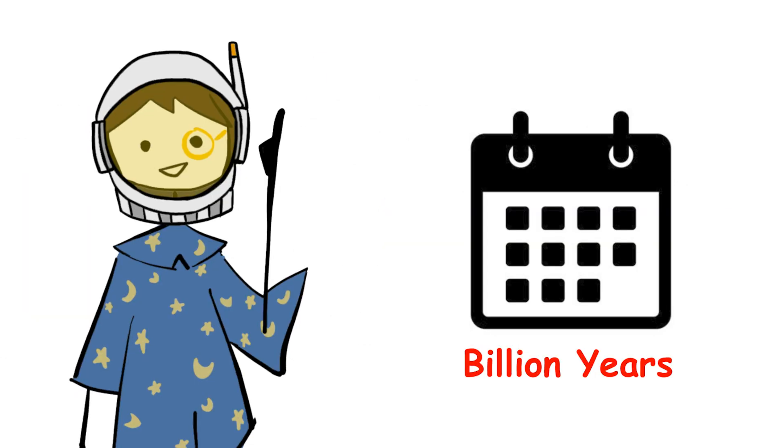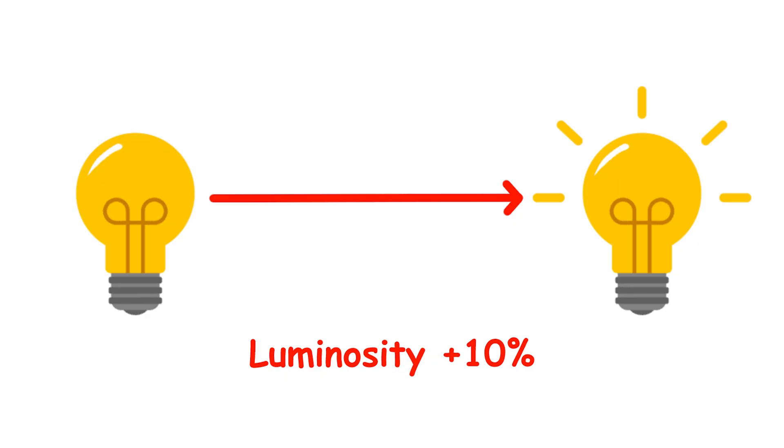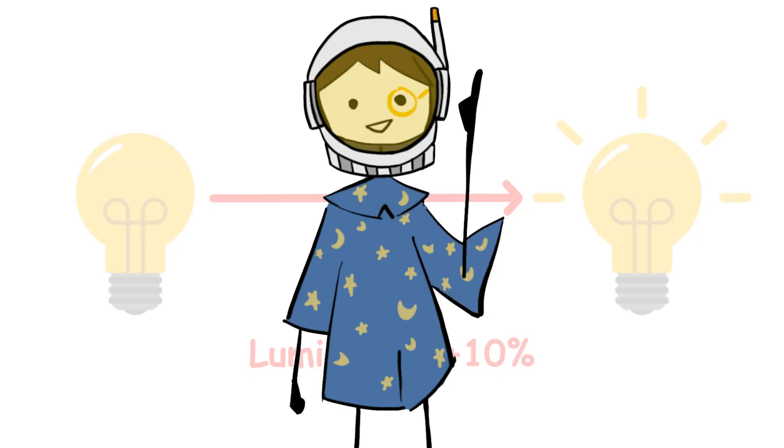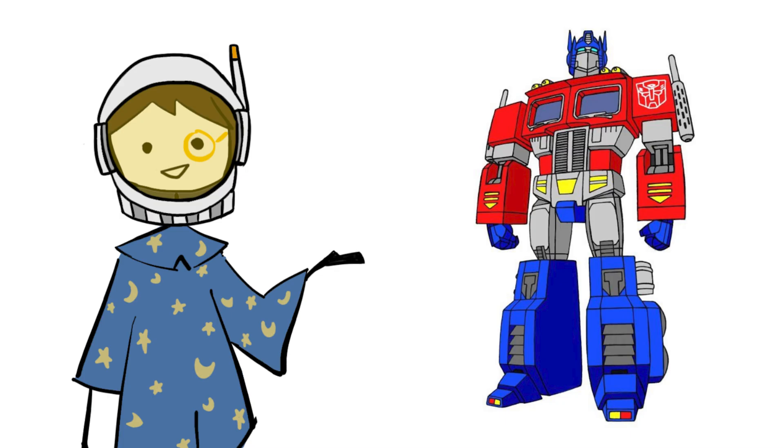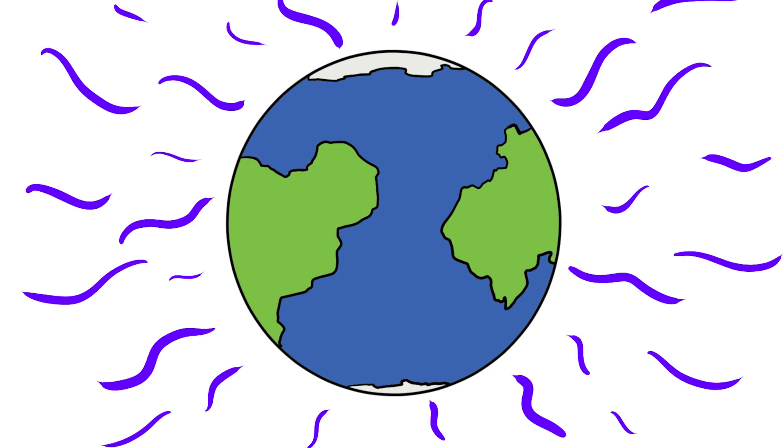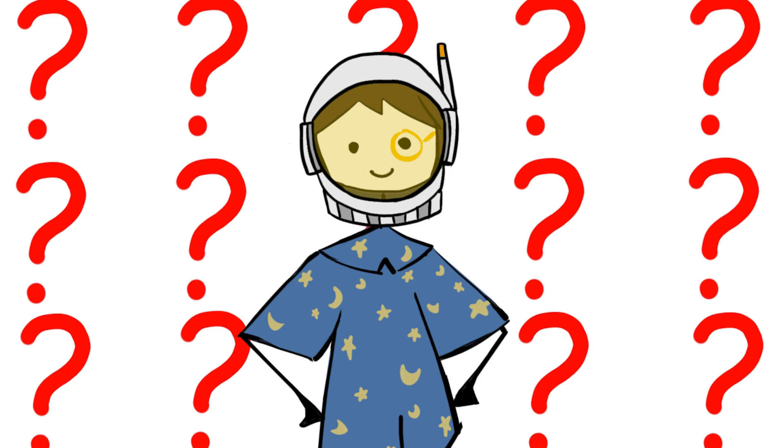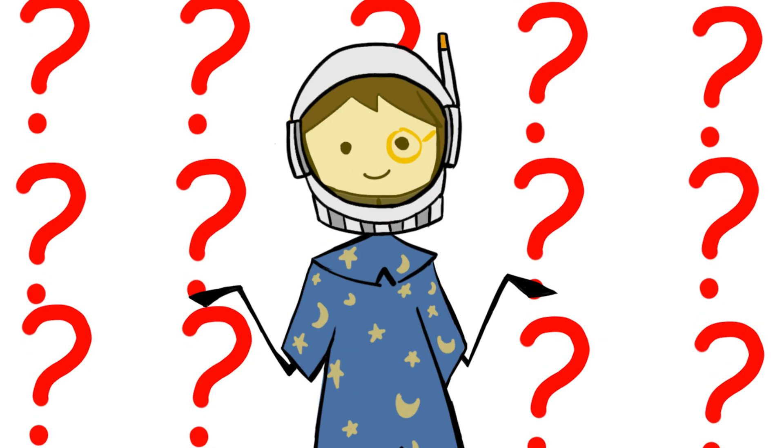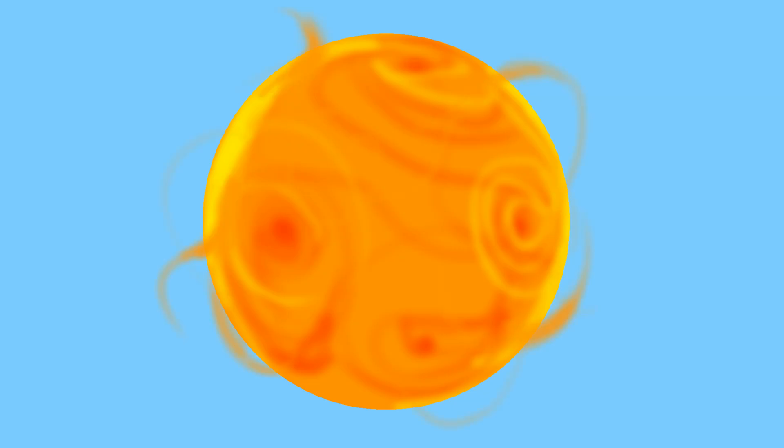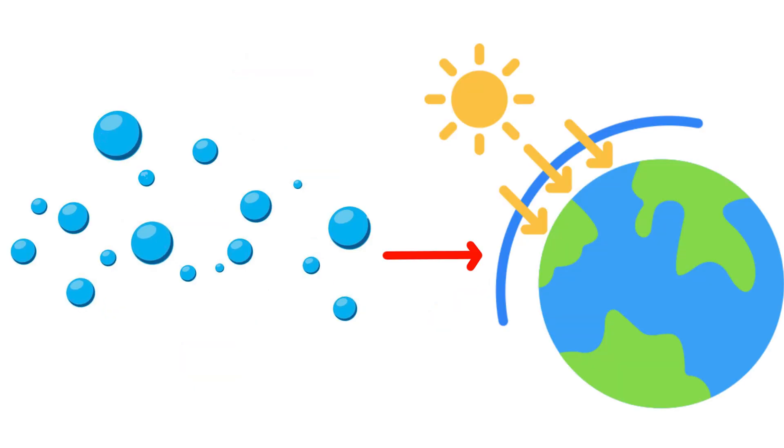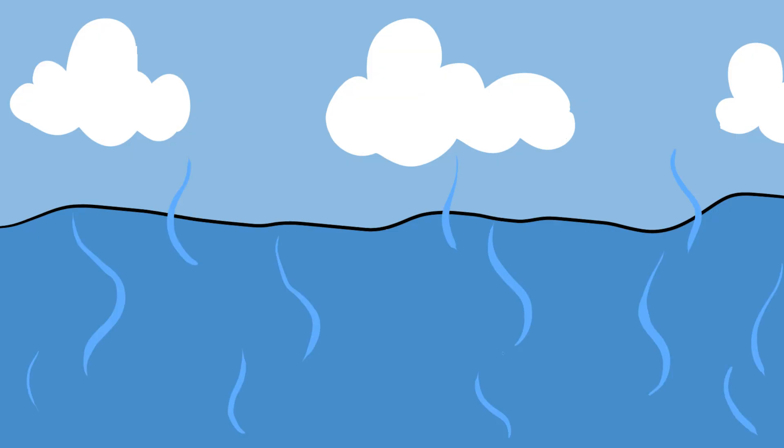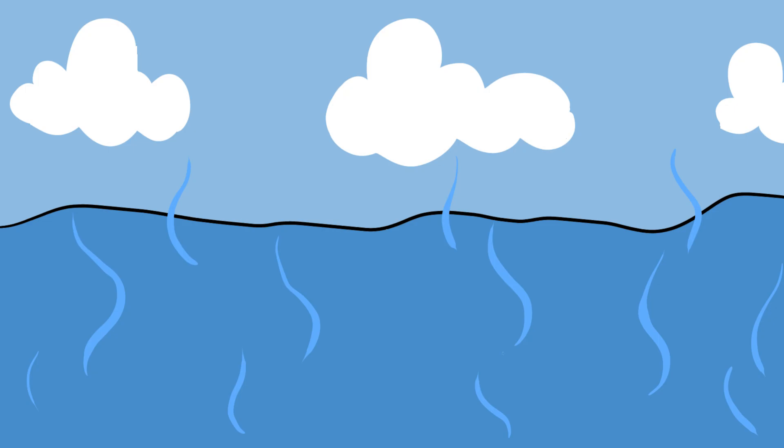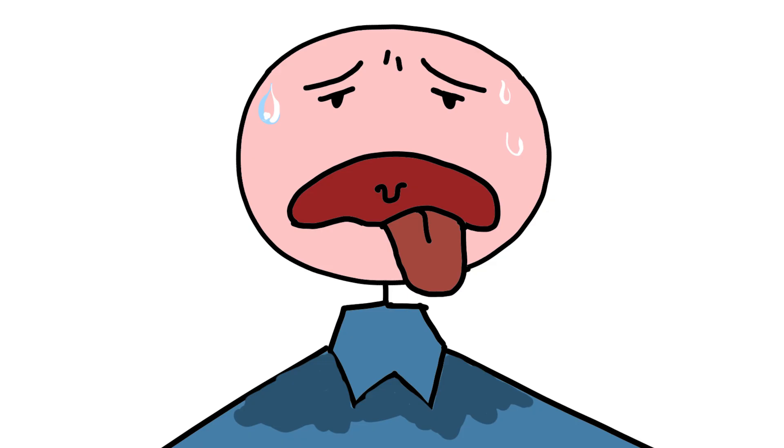Around 1 billion years from now, the Sun's luminosity will have increased by 10% from present levels. The increased solar output triggers a runaway greenhouse effect. Water vapor, a potent greenhouse gas, accumulates in the atmosphere as the oceans begin to evaporate. The feedback loop accelerates. More evaporation leads to more warming, which leads to more evaporation.